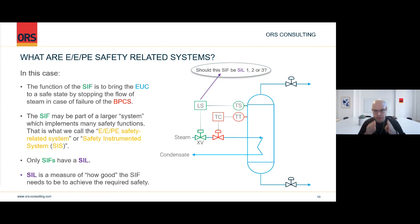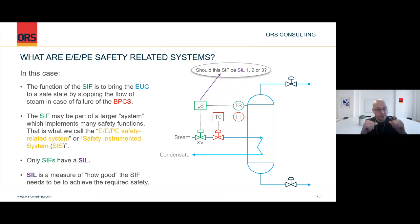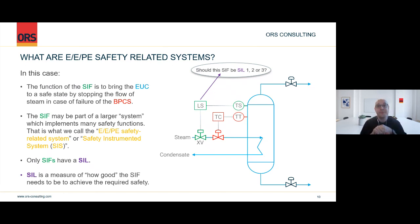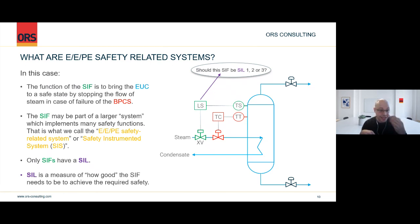SIL is how good that temperature function — that high-high temperature trip — needs to be. Another example outside process industry: a car is the equipment under control. To ensure that the driver, the people in the car, and people outside the car are safe, you have a safety instrumented function — the car brakes. That function has components that are electrical, electronic, or programmable electronic, ensuring that your equipment under control is kept in a safe state. SIL would be: how good do my brakes need to be? And that depends on the consequences of them failing.